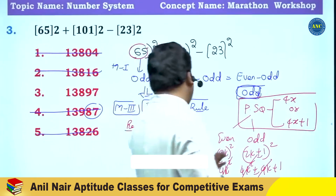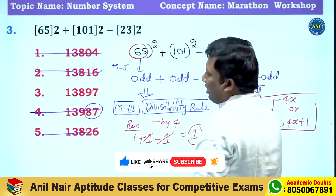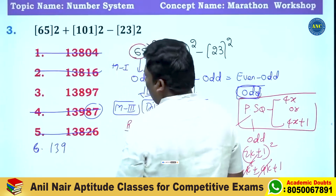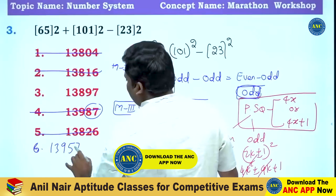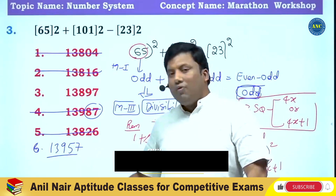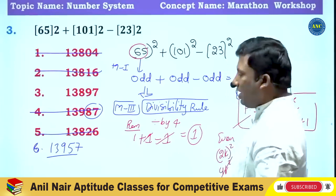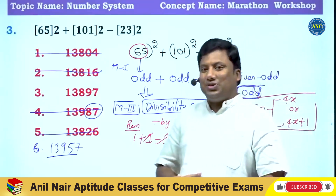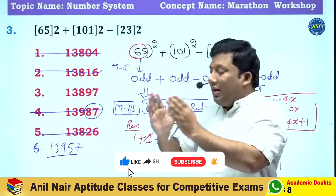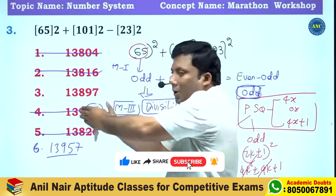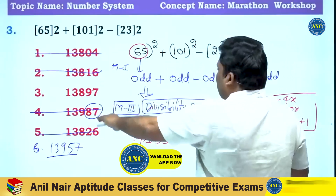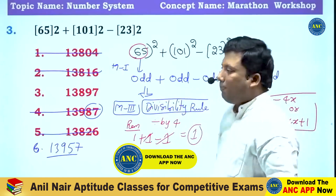What if the option ends in digits 1, 3, 9, 5, 7? Then we would solve using the last two digits logic. To summarize the strategy: if Anil sir asks you to check answer options and there is an even/odd combination, use the odd/even logic first. Then use the divisibility rule if every term is a perfect square.